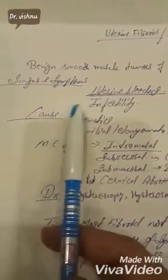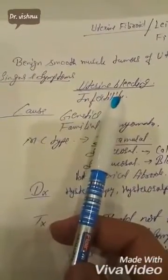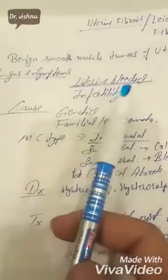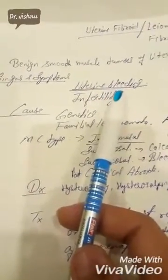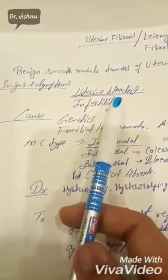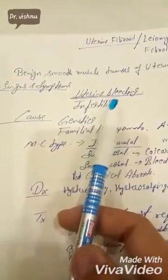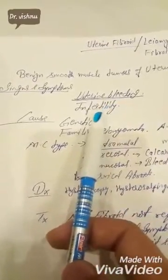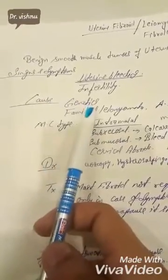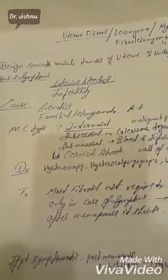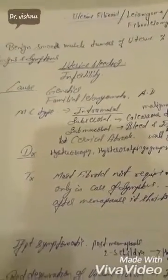If we go into signs and symptoms, uterine fibroids cause uterine bleeding like menorrhagia, and they also cause infertility. Regarding genetics, familial leiomyoma is autosomal dominant.